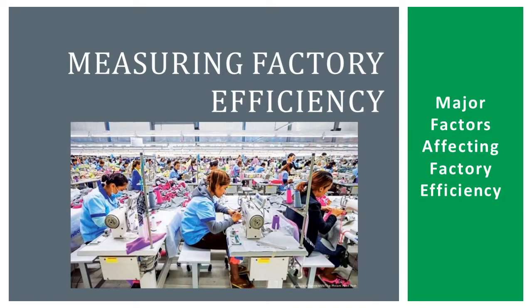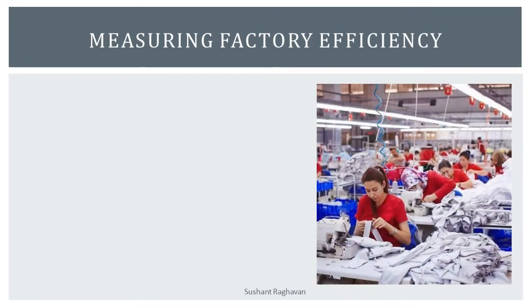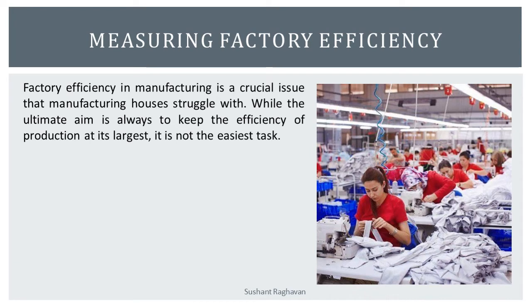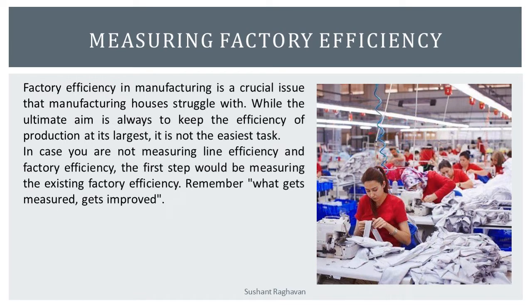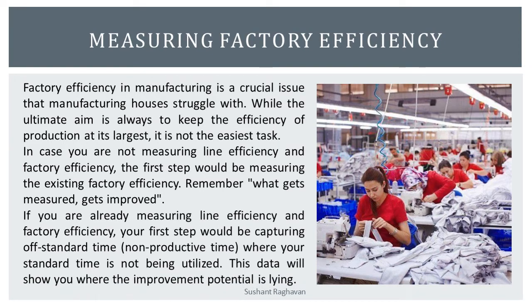Major factors affecting factory efficiency. Factory efficiency in manufacturing is a crucial issue that manufacturing houses struggle with. While the ultimate aim is always to keep the efficiency of production at its largest, it is not the easiest task. If you are not measuring line efficiency and factory efficiency, the first step would be measuring the existing factory efficiency. Remember, what gets measured gets improved. If you are already measuring line efficiency and factory efficiency, your first step would be capturing off-standard time and non-productive time — where your standard time is not being utilized. This data will show you where the improvement potential is lying.